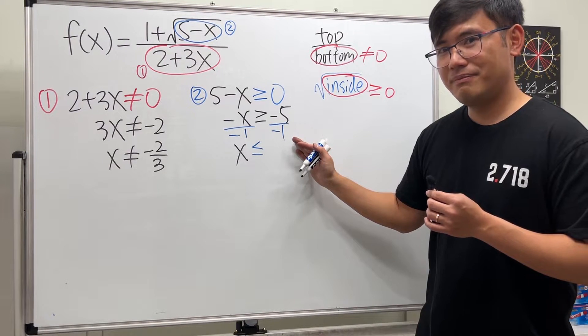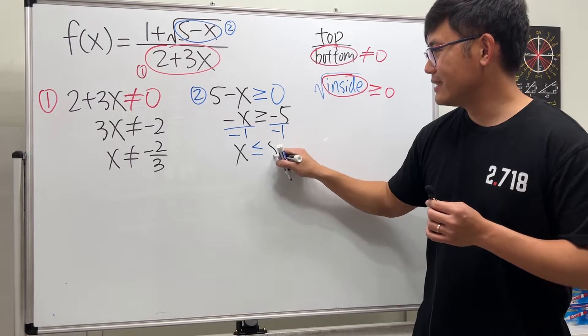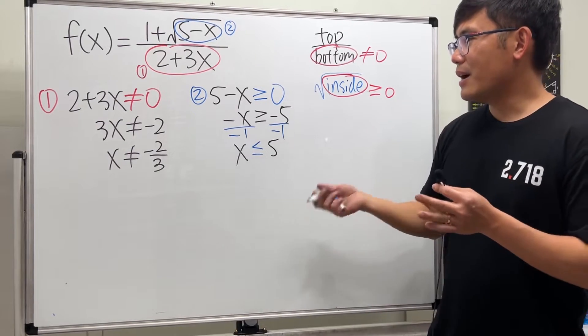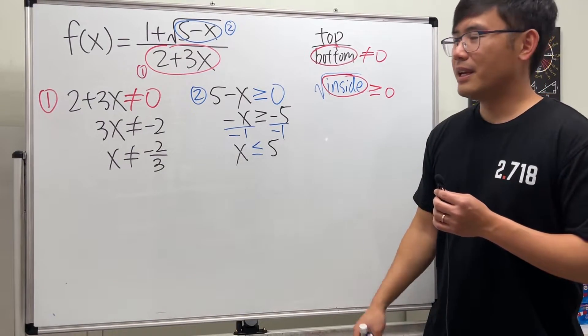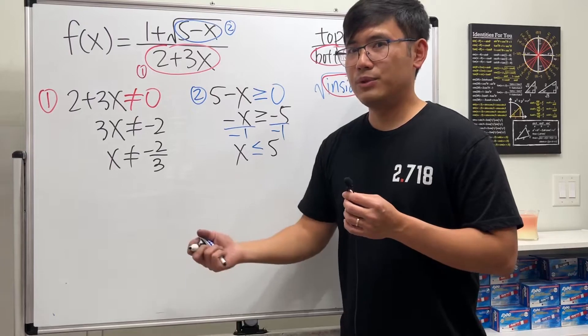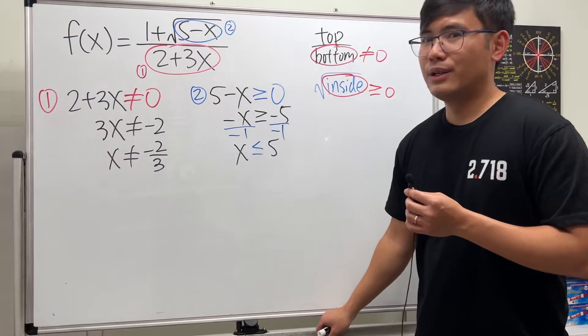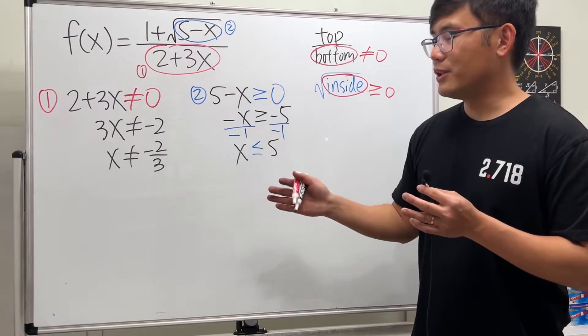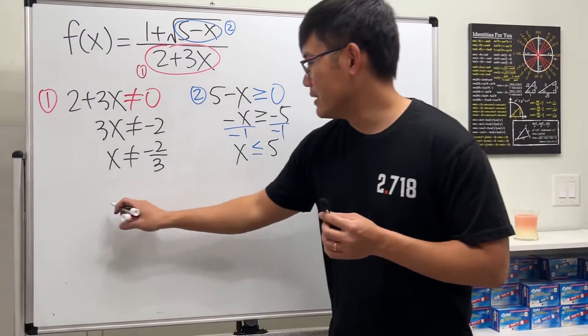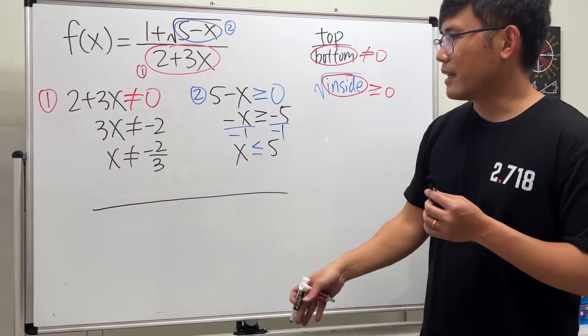Now what do we do next? We are going to combine these two conditions and write the domain in interval notation. I recommend you put the conditions on the number line. Use the graph; it's much better.